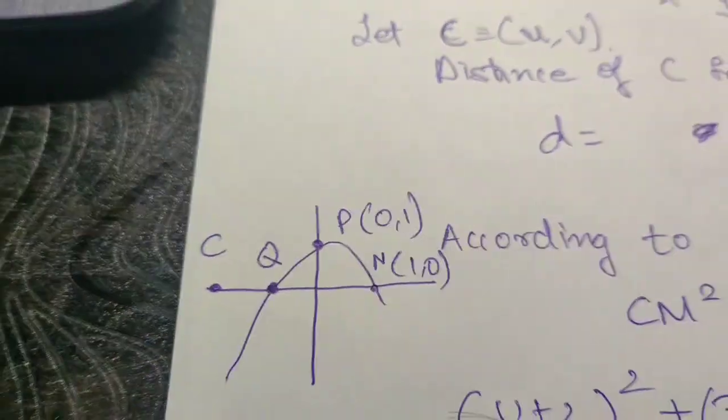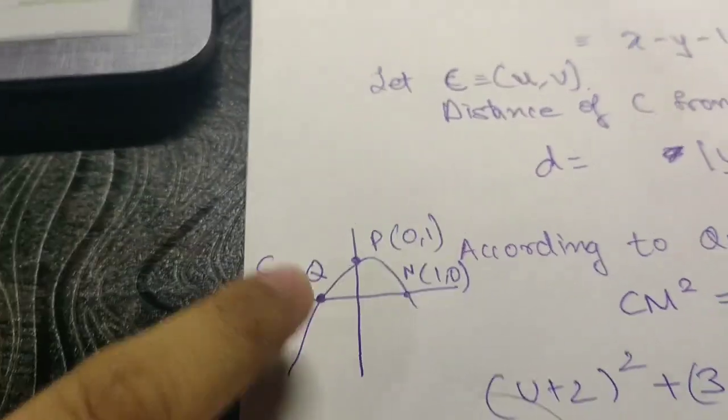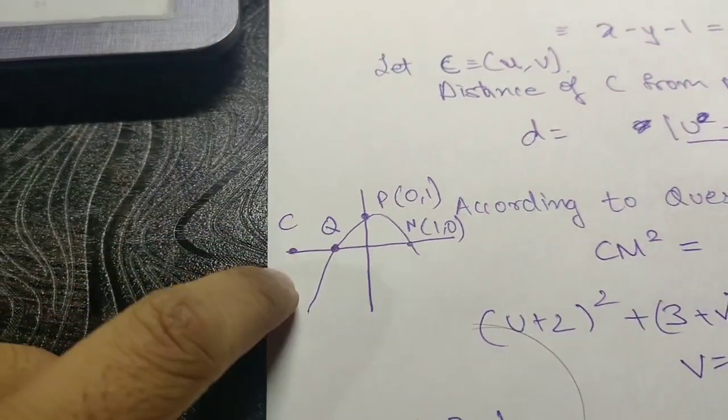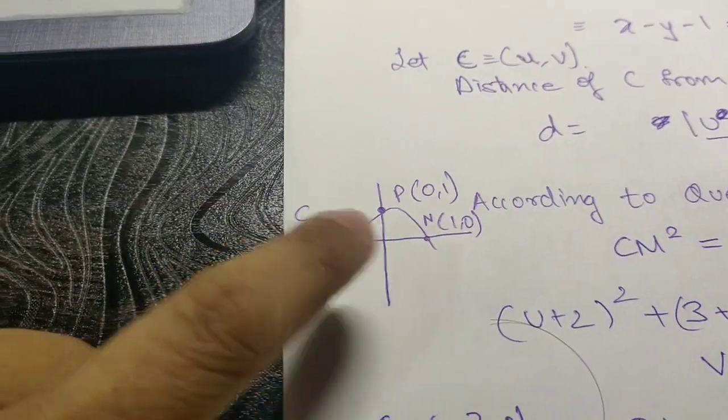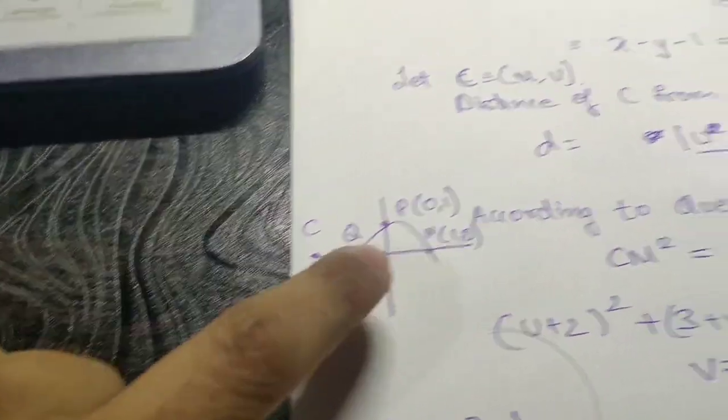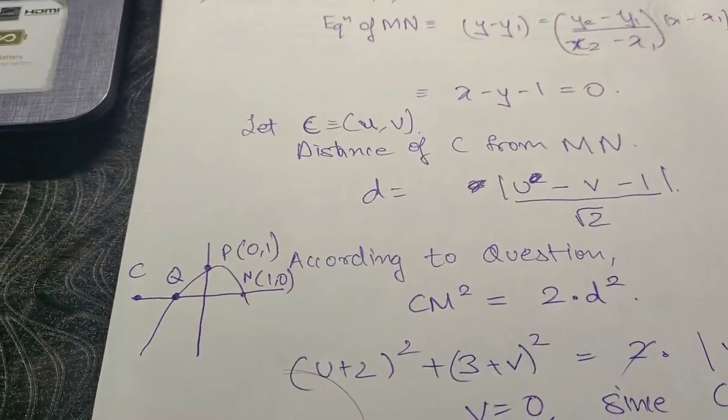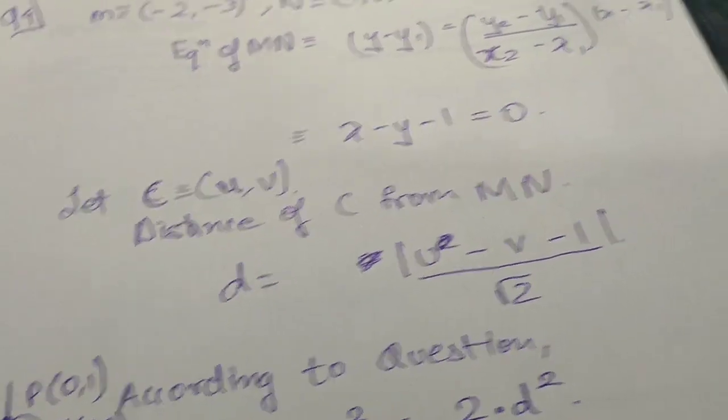If you look at this diagram, we have been given particle A which takes a parabolic path and we have to find the distance CQ. To find the distance CQ we have to first find the position of C and position of Q. To do that, first we will find the position of C.